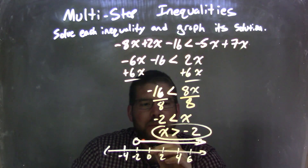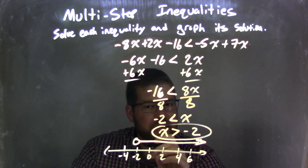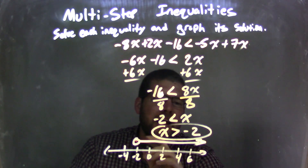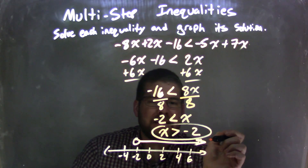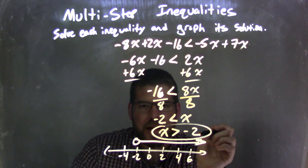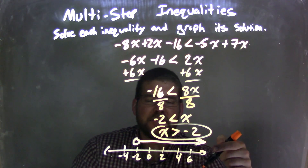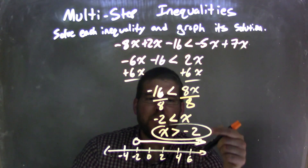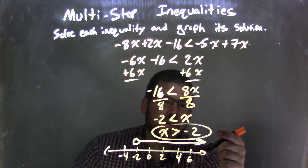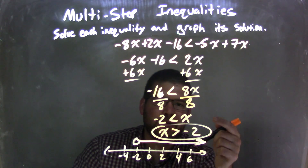Open circle because x is not equal to negative 2, and I put my arrow to the right because x is greater than negative 2. This graph now matches my final answer, which is x is greater than negative 2.